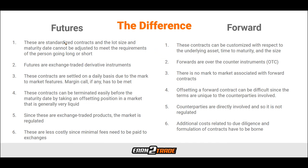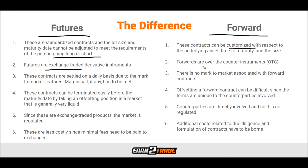Here are six differences between futures and forward contracts. Futures are standardized — lot size and maturity date cannot be adjusted. Forward contracts can be customized with respect to the underlying asset, time to maturity, and size. Futures are exchange-traded derivative instruments; forwards are over-the-counter instruments — no exchange is needed. Futures are settled on a daily basis due to mark-to-market, and any margin call must be met or the position will be closed. Forward contracts have no mark-to-market and therefore no margin call.